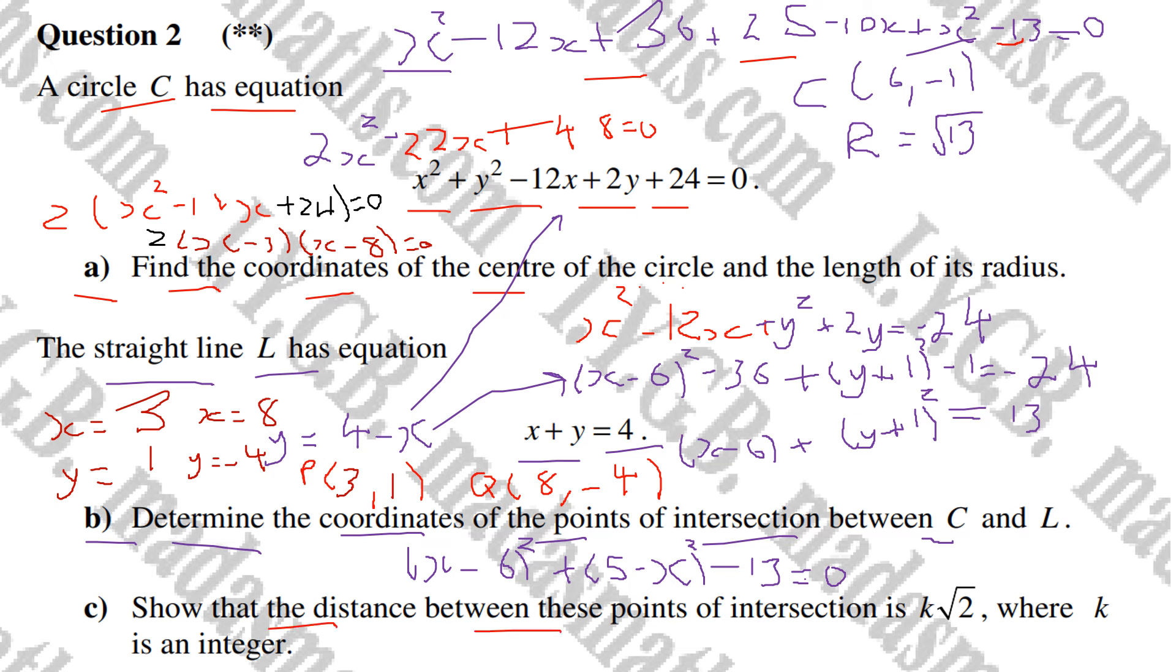Part c: Show that the distance between these points of intersection is k root 2, where k is an integer. Using Pythagoras, from 3 to 8 is 5, from 1 to minus 4 is also 5. The distance is square root of 5 squared plus 5 squared, which is root 50. Simplifying, that's root 25 times root 2, so 5 root 2. Therefore k equals 5.